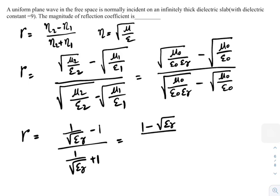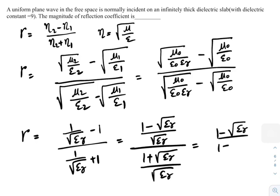That equal to 1 minus root epsilon r by root epsilon r by 1 plus root epsilon r by root over epsilon r. That equal to 1 minus root epsilon r by 1 plus root epsilon r.